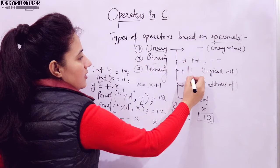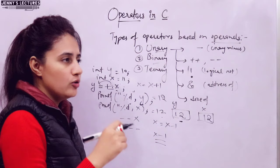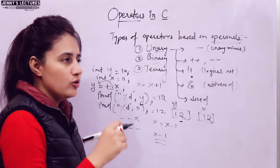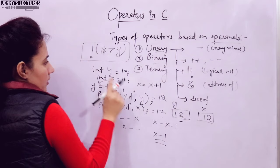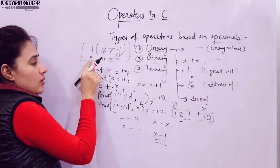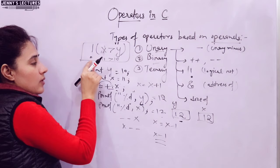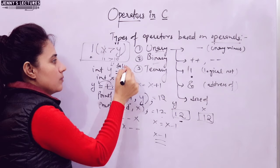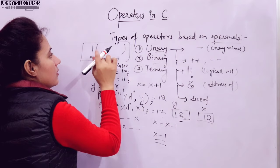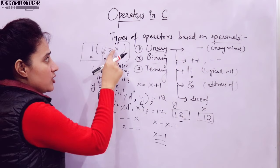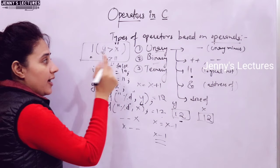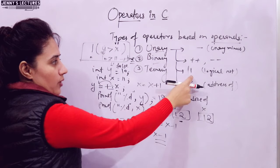Next is the logical NOT operator. It converts a true value to false and a false value to true — it reverses the logical state of an operand. For example, if x = 11 and y = 10, then x > y is true, but with logical NOT applied it returns false. Conversely, y > x is false, but with logical NOT it returns true.